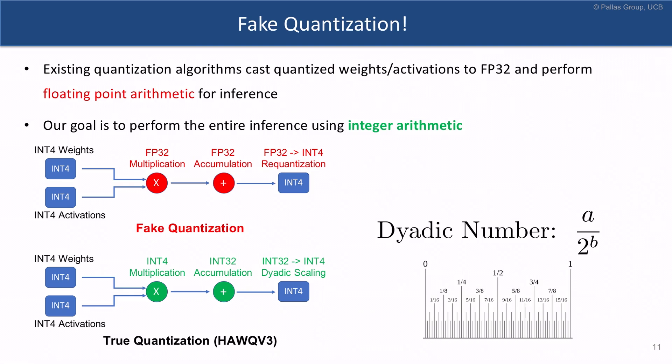As illustrated in the figure here, if you have a weight quantized to int-4 and an activation quantized to int-4, to perform the multiplication between these weights and activations, fake quantization approaches first cast these int-4 weights and activations to floating point.